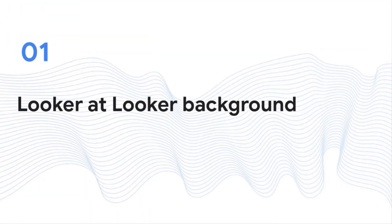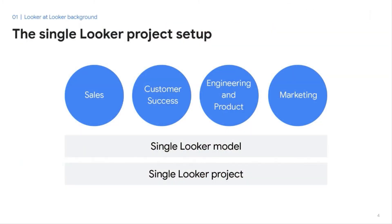Before we jump into the existing project setup, it's helpful to understand how we previously deployed and managed code at Looker. In the legacy Looker setup, we had a single Looker project and a single Looker model that served all departments at Looker. This included various teams including sales, customer success, engineering and product, and marketing. There were hundreds of view files and many, many lines of code. This was also before folders were introduced into the Looker IDE, so you can imagine how difficult it might be for a developer to find a specific field or file.